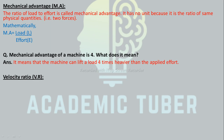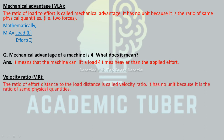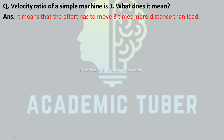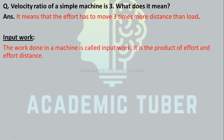Velocity Ratio (VR): the ratio of effort distance to the load distance is called velocity ratio. It also has no unit because it is the ratio of the same physical quantities. Mathematically, VR equals effort distance divided by load distance. If the velocity ratio of a simple machine is 3, it means that the effort has to move three times more distance than the load.